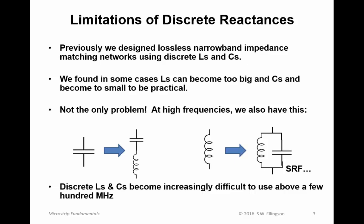First, limitations of discrete reactances — that is, inductors and capacitors that we would ordinarily use on a printed circuit board. Previously we have designed lossless, narrow band impedance matching networks using discrete inductors and capacitors, L's and C's. However, in some cases the values of L that we need become too big, and the values of C that we require sometimes become too small to be practical. But that's not the only problem.